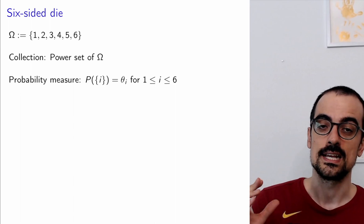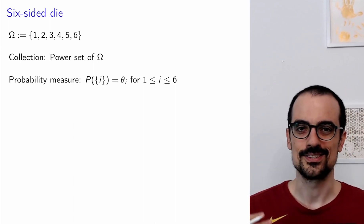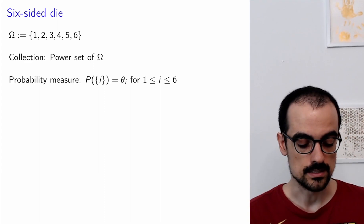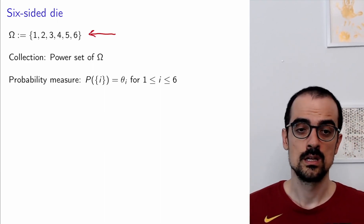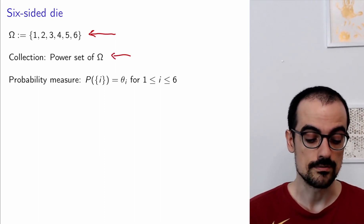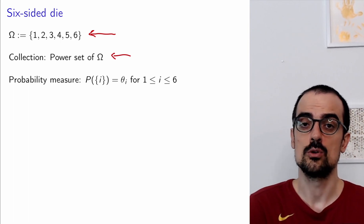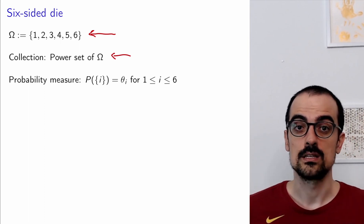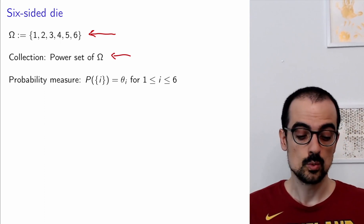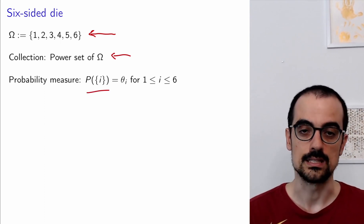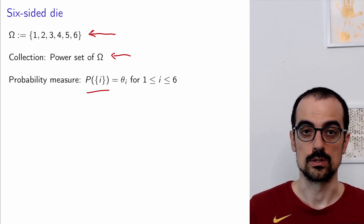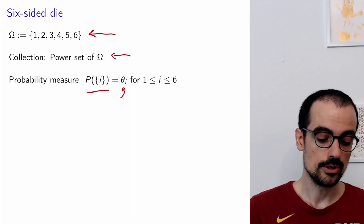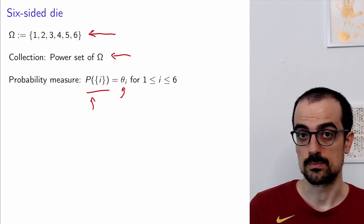Let's take a look at the six-sided die example in a bit more detail, just to make sure everything conforms to what we talked about in the video on probability spaces. We have a sample space of possible outcomes: 1, 2, 3, 4, 5, 6. We consider a collection which is the power set of omega — every possible subset. In order to define a valid probability measure on this collection of events, we just need to determine the probability of each die roll — rolling a 1, rolling a 2, and so on. These have to be non-negative and add up to 1 because the union of these events equals the sample space.